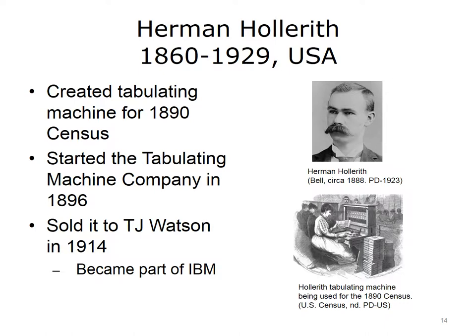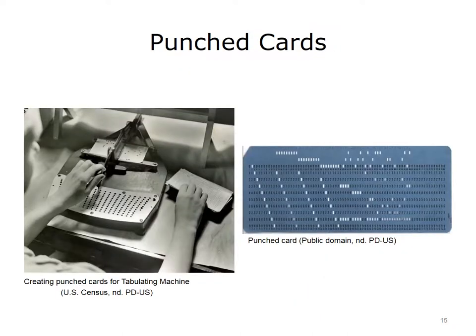Hollerith started the tabulating machine company in 1896, with the knowledge that the U.S. census would need these machines every 10 years. He sold the machine to T.J. Watson in 1914. T.J. Watson was the founder of IBM. IBM manufactured and marketed a wide variety of business machines and added the Hollerith card equipment to its line of products. Like the analytical machine, the tabulating machine used punched cards for input. These punched cards could be used to program the machine and also for inputting data.